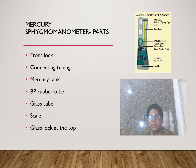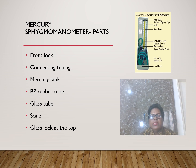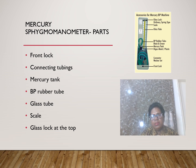A mercury sphygmomanometer is the instrument used to take BP. Its parts include: a control lock, connecting tube, washers, mercury column, mercury tank, rubber tubing, glass tube, and a calibrated scale on the glass tube.